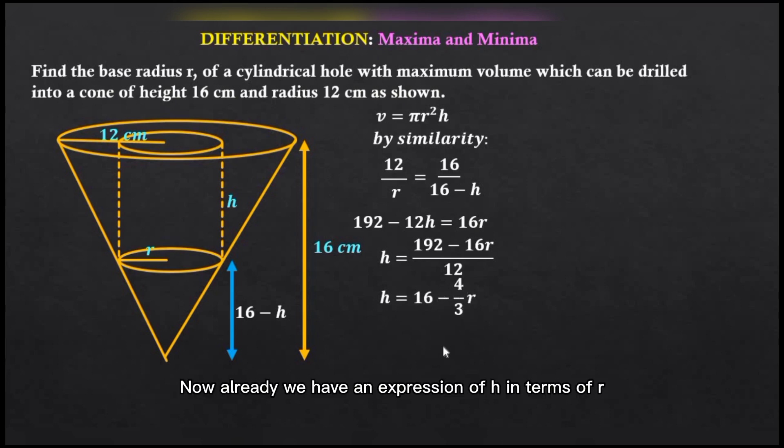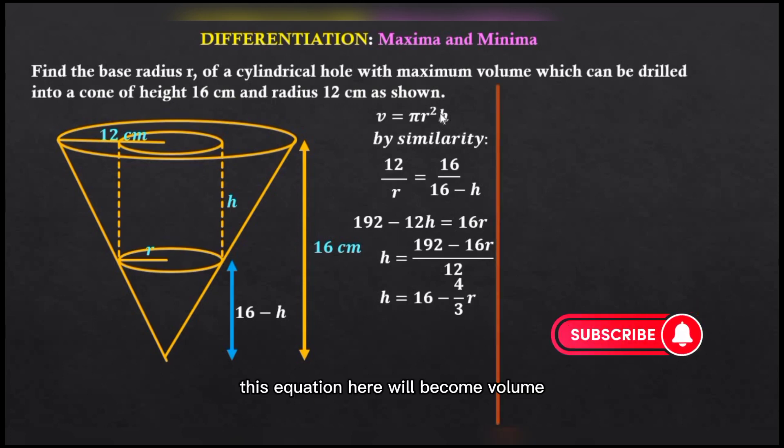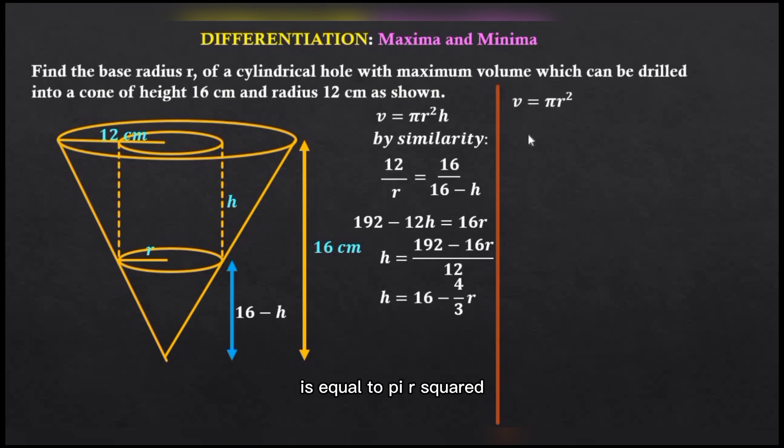Now we have an expression of h in terms of r which we are going to replace in this equation here. So this equation here will become v = πr²h, and h is now 16 - (4/3)r.